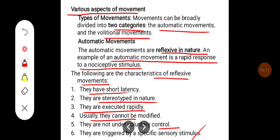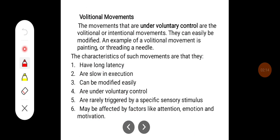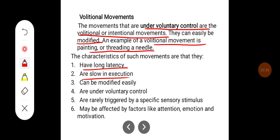Volitional movements are under voluntary control and are also called intentional movements. They can be easily modified. Examples include painting or threading a needle. The characteristics of volitional movements are: they have a long latency, they are slow in execution, they can be modified easily, they are under voluntary control, they are triggered by a specific sensory stimulus, and may be affected by factors like attention, emotion, and motivation.